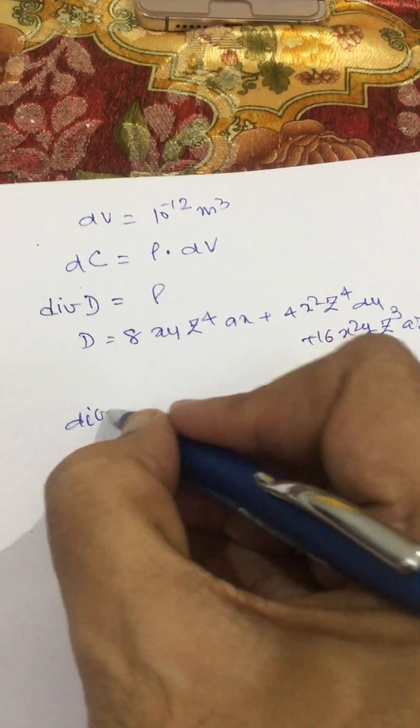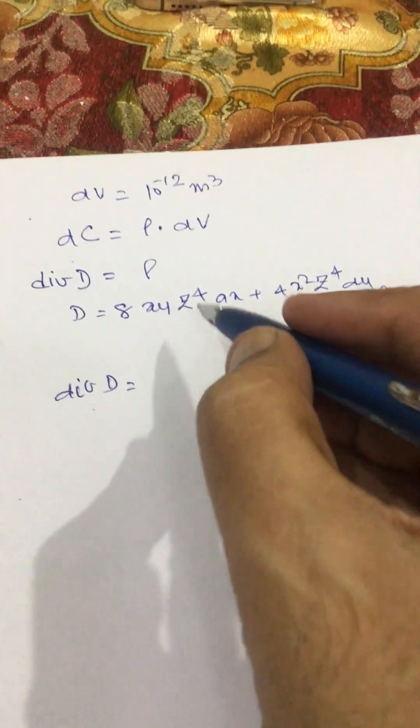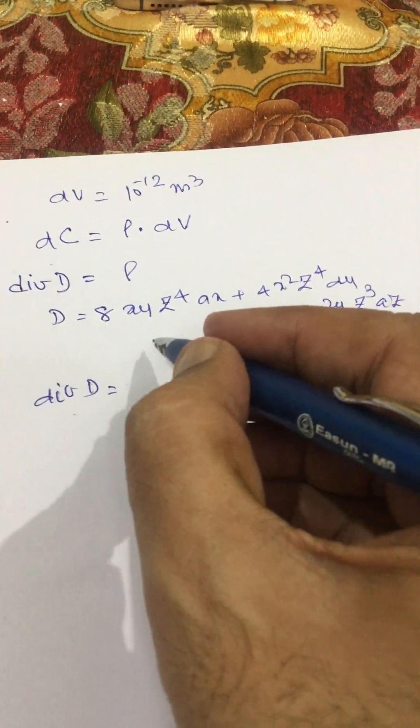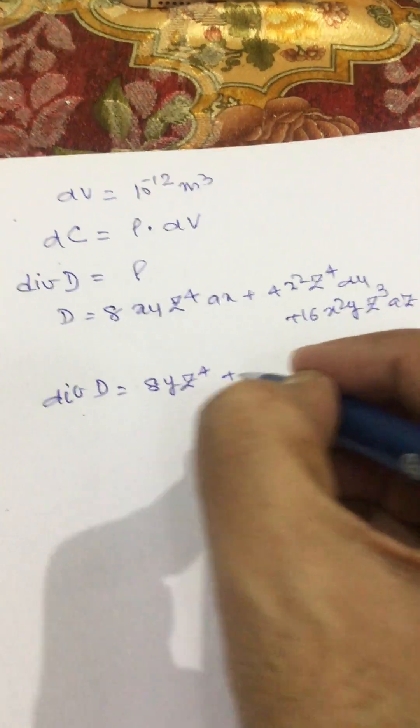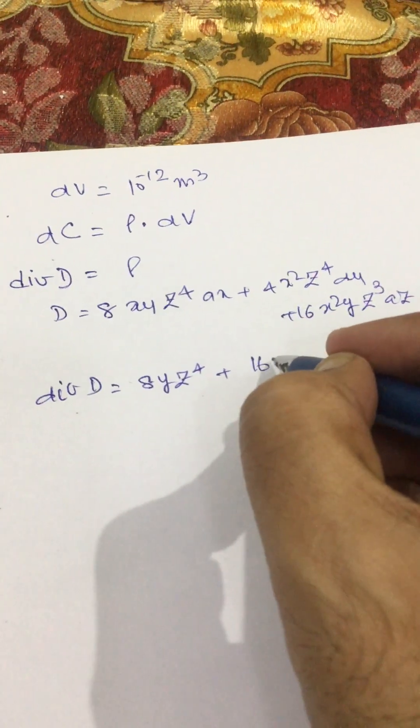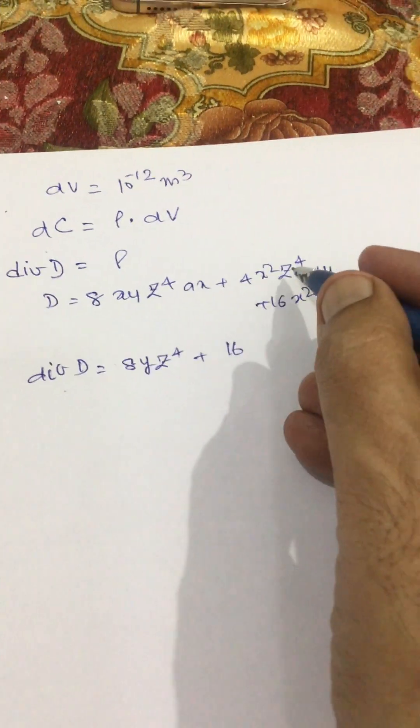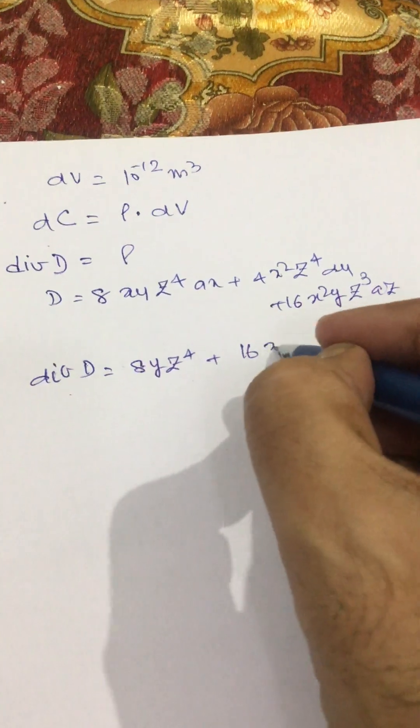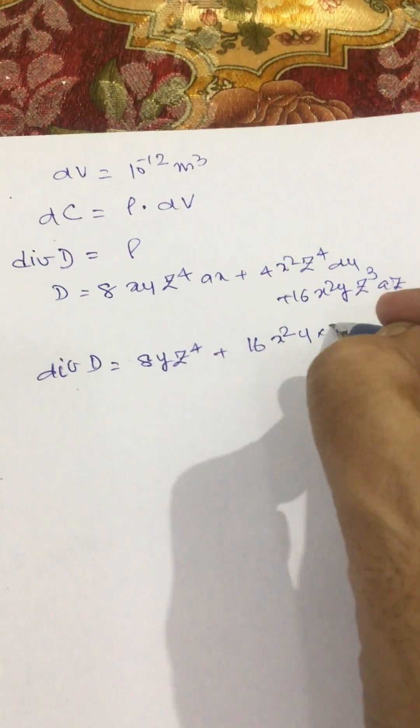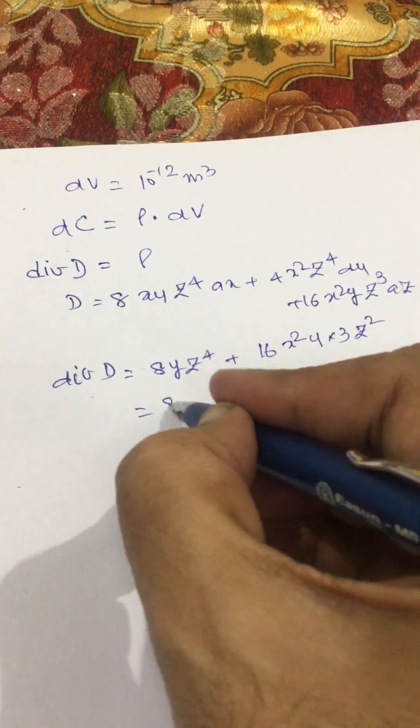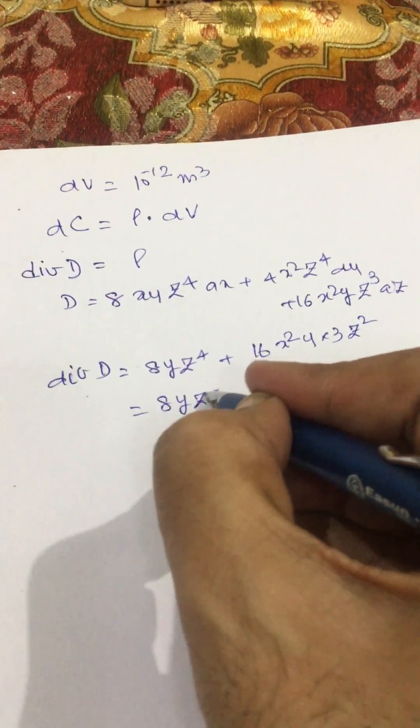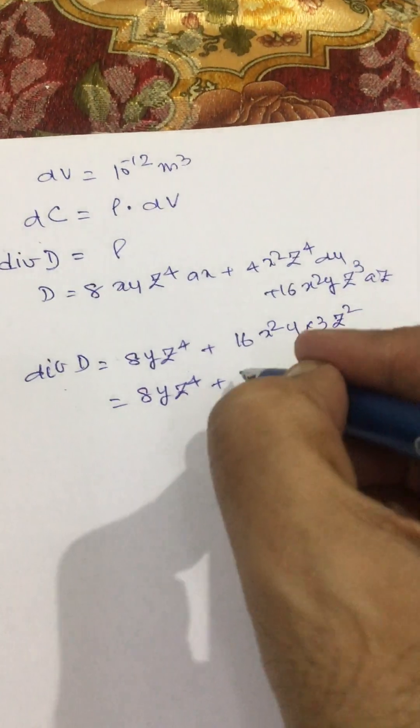Divergence of D will be equal to differential of this, that is 8yz^4 plus this is 0 because there is no y component here. So this becomes 16x^2y into 3z^2 equal to 8yz^4 plus 16 into 3, 48 into x^2yz^2.